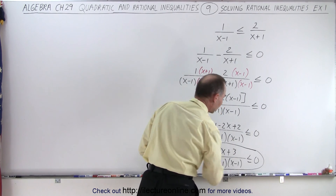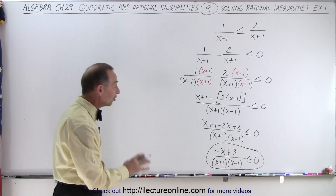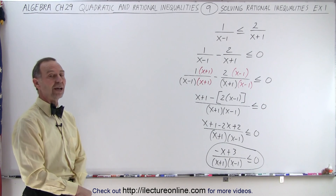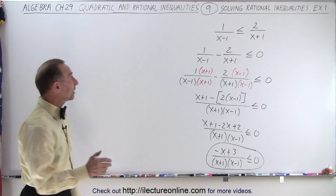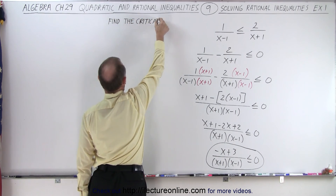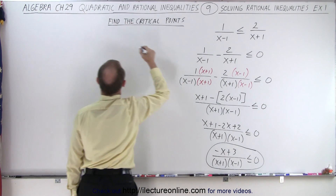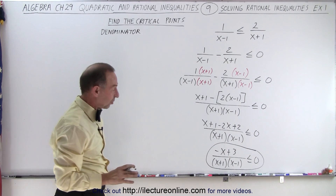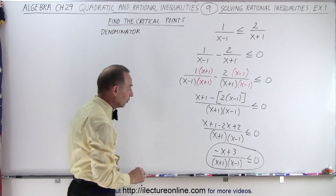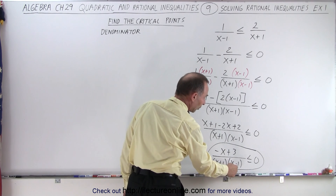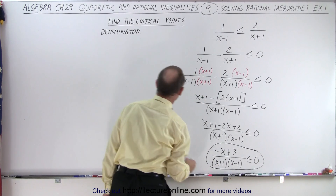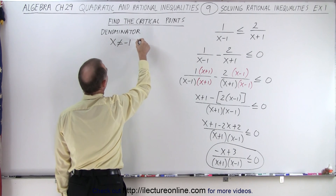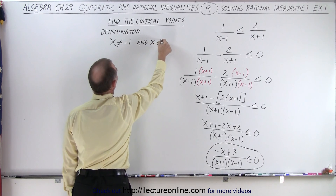Notice there's a lot of work to do just to get it into standard form — the expression on the left as a single fraction with zero on the right. Now we find the critical points by looking at the denominator. What values of x make the denominator equal to zero? When x equals one, x minus one is zero, and when x equals negative one, x plus one is zero.